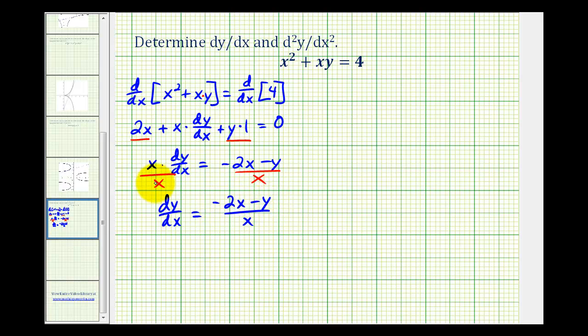Now if we wanted to, we could factor out a negative in the numerator. So we'd have dy/dx equals negative of the quantity 2x plus y divided by x. Now this is only half of the problem. We also want to determine the second derivative of y with respect to x. So now we'll take the derivative of the derivative to determine the second derivative. So now we'll differentiate both sides of this equation with respect to x.